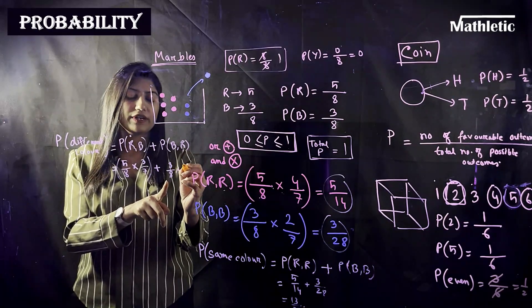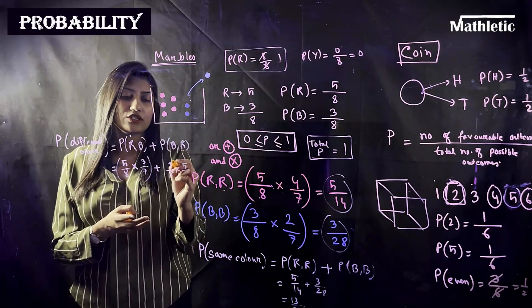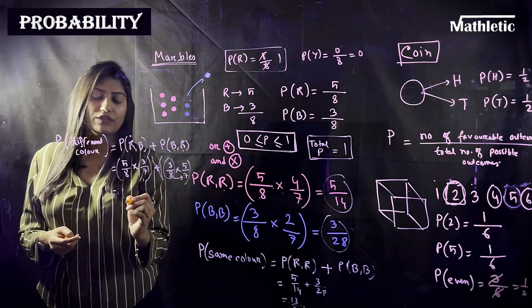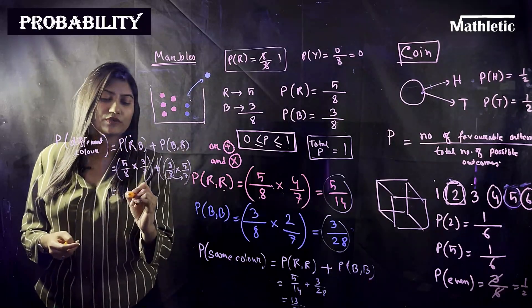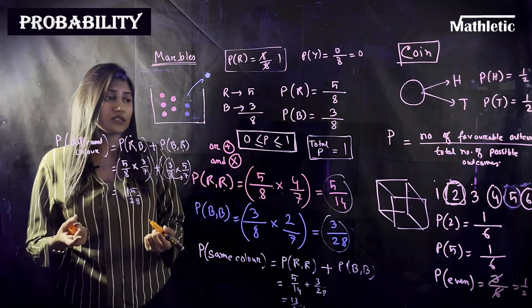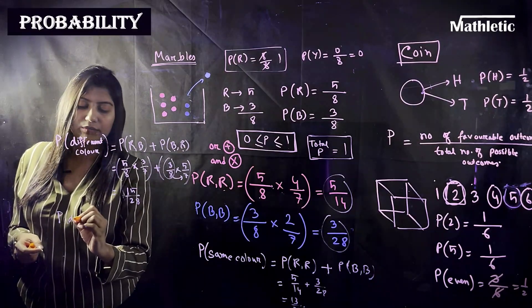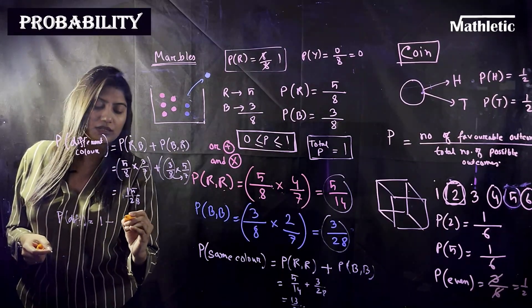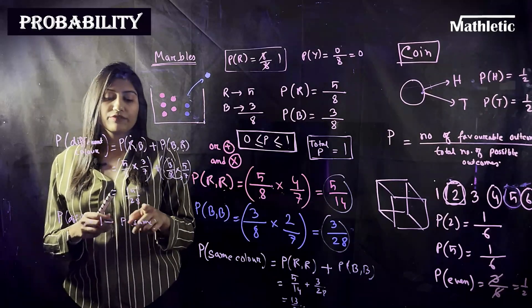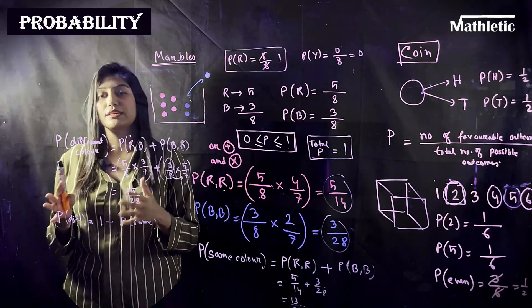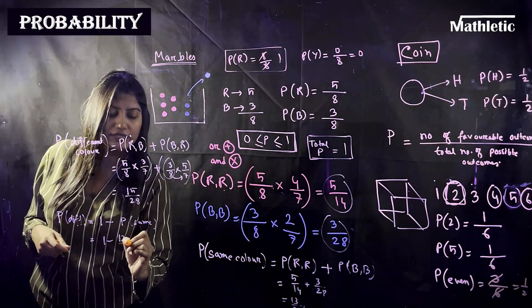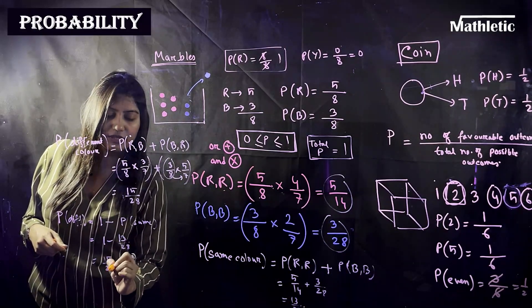Adding those two cases gives fifteen-twenty-eighths for the probability of different color marbles. There is also a shortcut: since total probability equals one, probability of different color equals one minus probability of same color, which is one minus thirteen-twenty-eighths, giving fifteen-twenty-eighths — the same answer.